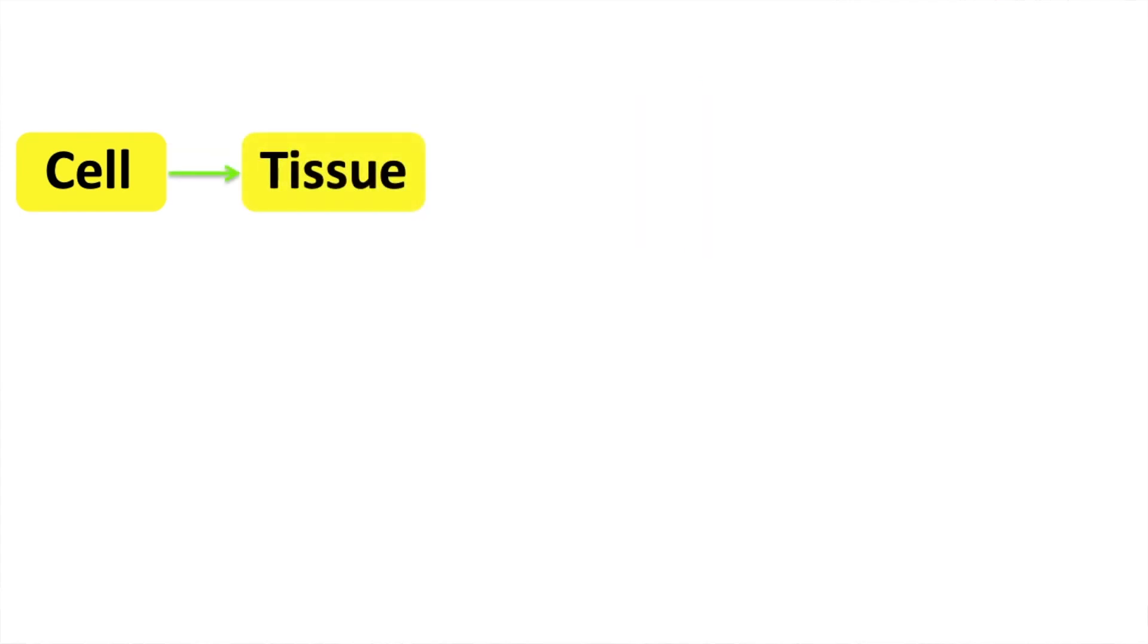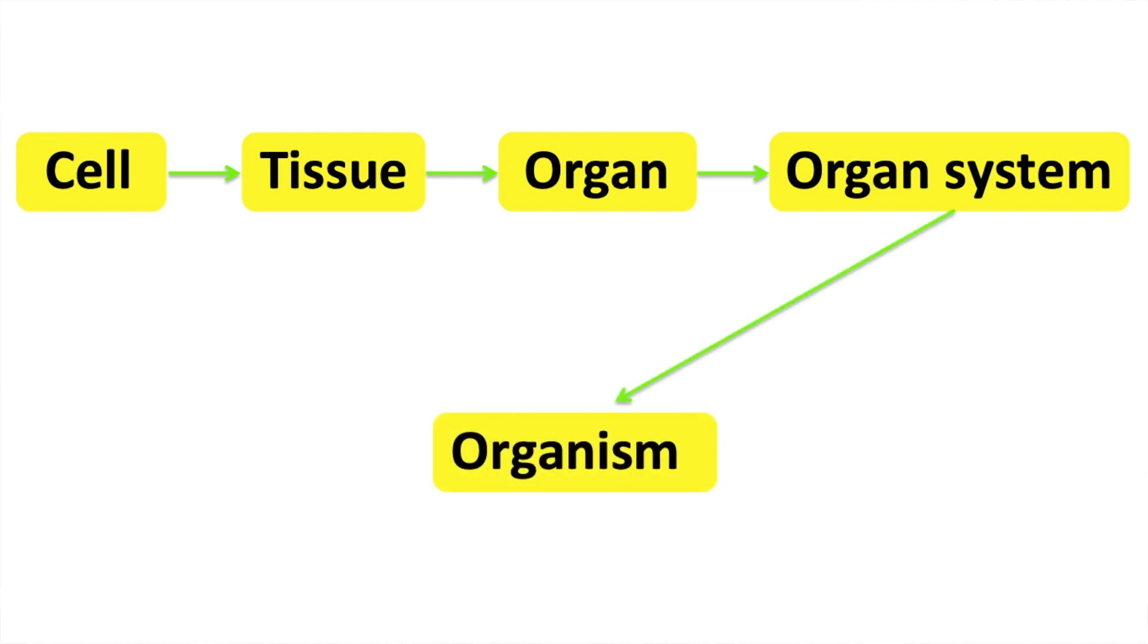In animals and plants, similar cells form tissues. Similar tissues form organs. Different organs then interact to form systems. Different systems interact to form an organism. Let's look at some examples.